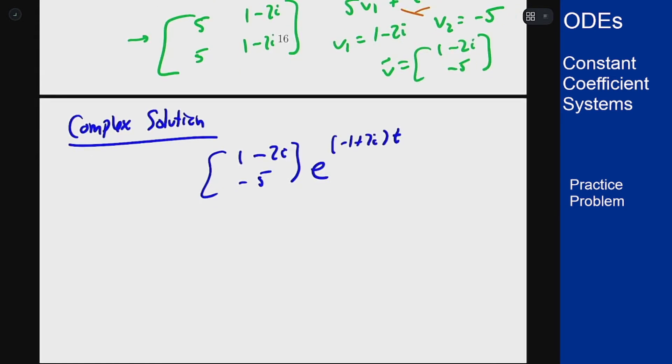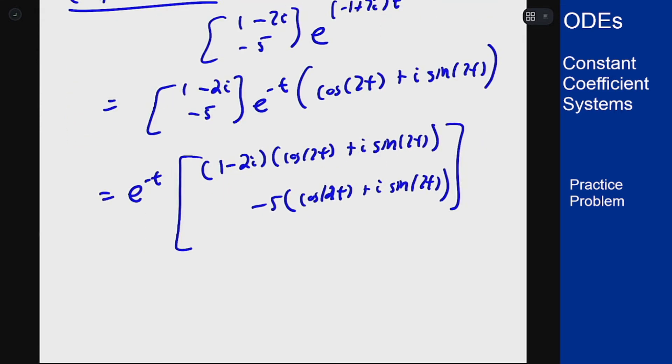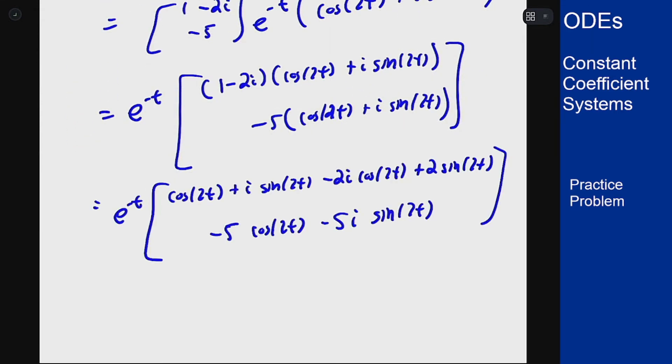I'm going to apply Euler's formula here, distribute everything through into the vector, spell everything out, and then collect the real and imaginary parts to get my two independent solutions. The real parts will be this cosine, this plus two sine, and the minus five cosine here. And the imaginary are the sine here, the minus two i cosine, and then the sine in the bottom.